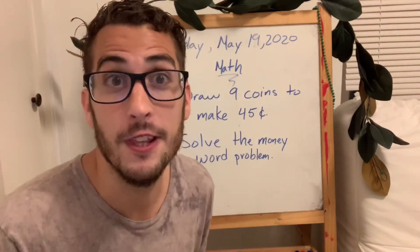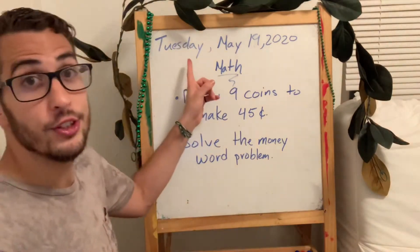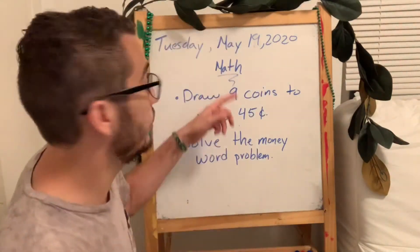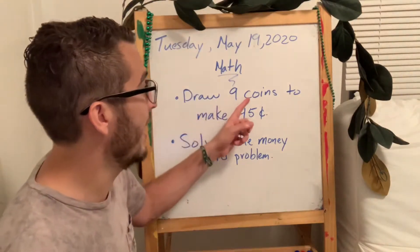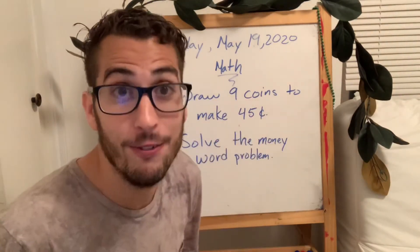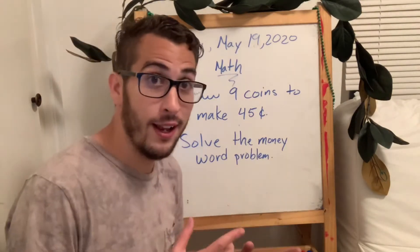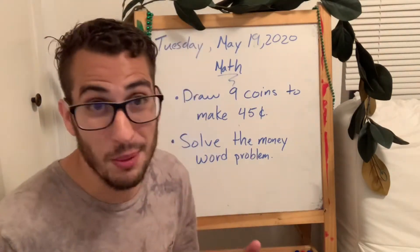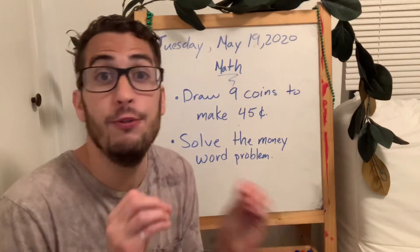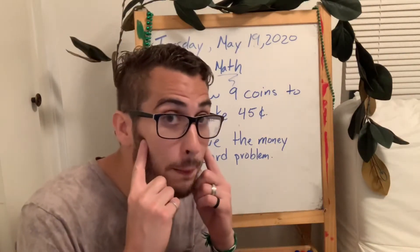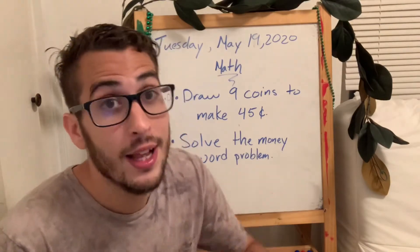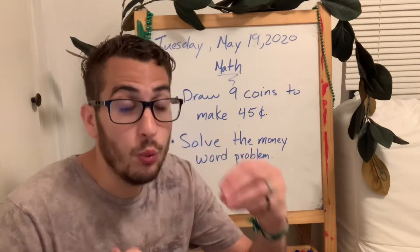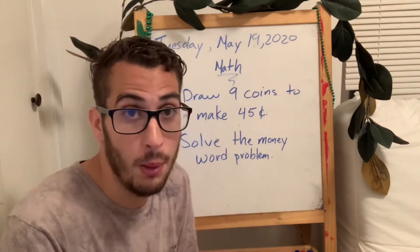Let's continue with the class. Today is Tuesday, May 19, 2020. Today on math, you're going to draw nine coins to make 45 cents. And then you're going to solve a money word problem. The same thing that we did yesterday, but with different numbers. We need to remember the word savings. Savings means ahorrar. Because that word, we're going to listen to it today again on the word problem.